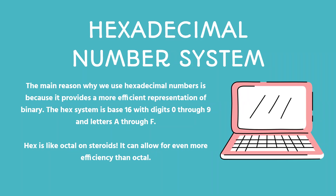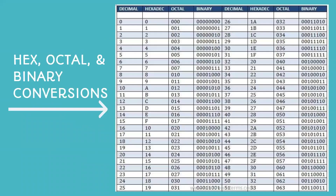The hexadecimal number system is used because it provides a more efficient representation of binary. The hex system is base 16 and has digits zero through nine and letters A through F, allowing for more efficiency than octal. Here's another chart for hexadecimal, octal, and binary conversions. This is helpful if you had to do these by hand, but we're just showing you how cool it is that you can transfer between all of them.